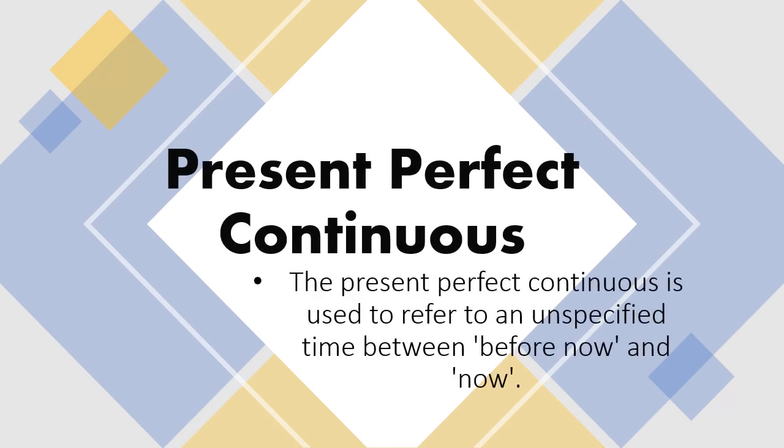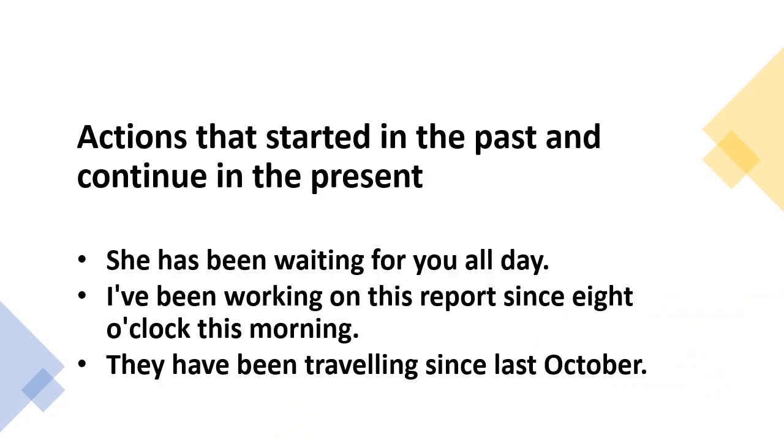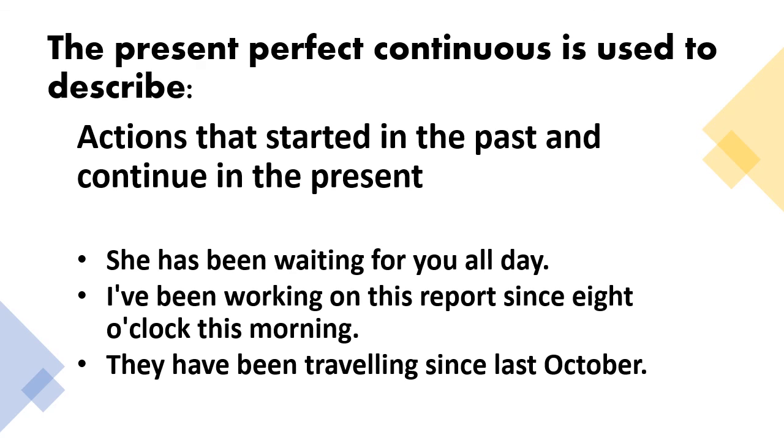Present perfect continuous. Present perfect continuous is used to refer to an unspecified time between before now and now. So, these are actions started in the past and continue in the present. For example, she has been waiting for you all day. So, since the beginning of the day until now she is waiting. Another example is, I've been working on this report since 8 o'clock in the morning. It means that since 8 o'clock she has been working on that report up until now. Another example is, they have been traveling since last October. So, since last October they were traveling and currently traveling.